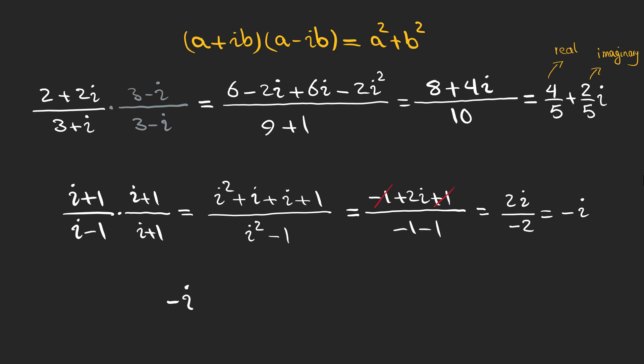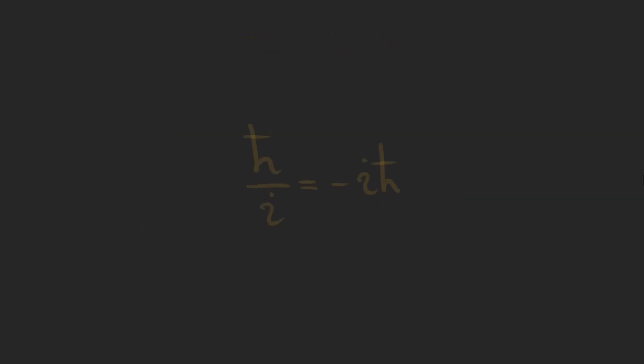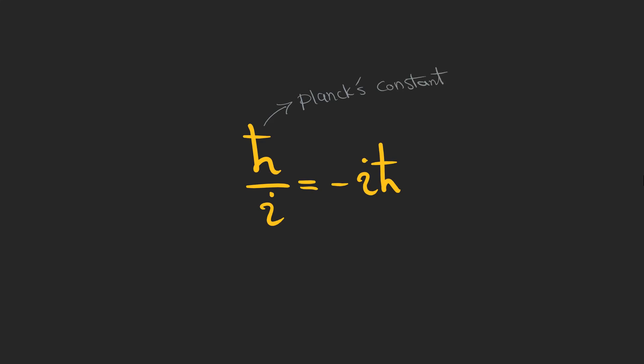Take a look at minus i — we can actually write minus i as one over i. In quantum physics this form is used a lot and we should pay attention to the minus sign. Here h-bar is Planck's constant and i is the square root of minus one. In the next video I'm going to talk about how we can graph complex numbers.